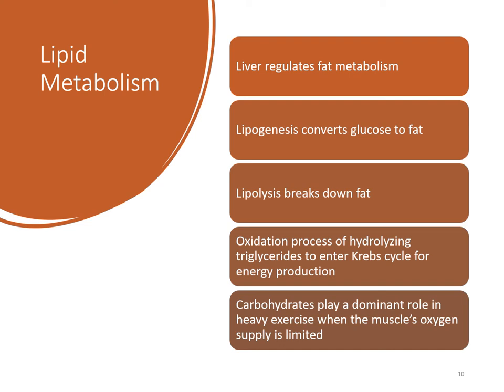Carbohydrates play a big role in heavy exercise when the muscle's oxygen supply is limited. The body stores glycogen, and when you have plenty of oxygen you can use fat for energy. But when you go beyond that and don't have enough oxygen, you have to turn to glycogen. Anytime you're doing cardio, you're using your glycogen — that fast energy.